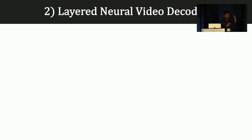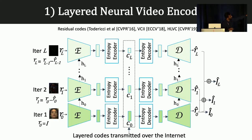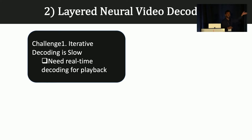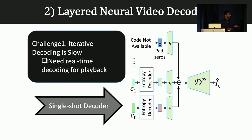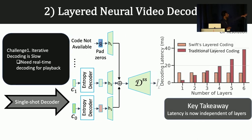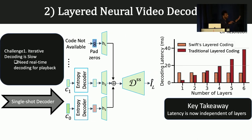Next, we introduce a neural decoder for layered streaming. The existing decoder iteratively decodes the codes, which has a latency problem. To address that, we introduce a separate client-side single-shot decoder that takes a subset of these codes, fuses them together, and decodes all of them in one go — in a single iteration. The net result is that because the codes are decoded in one go, the latency is now independent of the number of layers. As you can see, the traditional layered compression has a proportionate increase in latency compared to Swift's decoding.